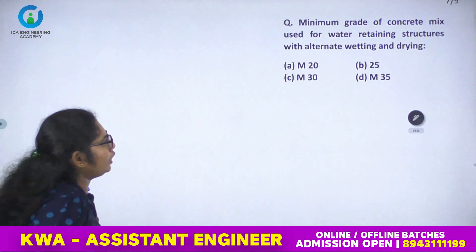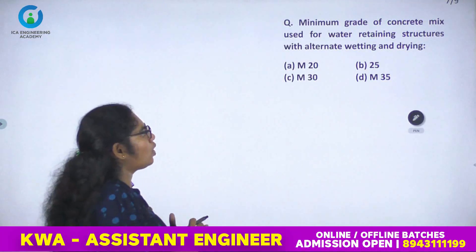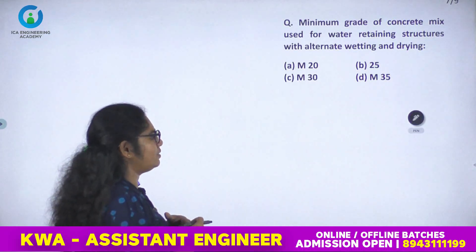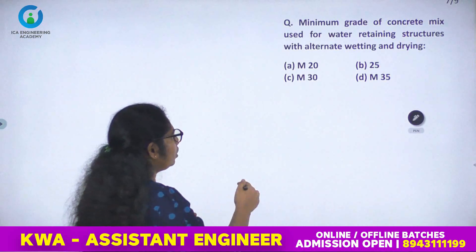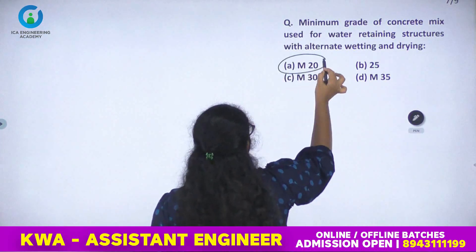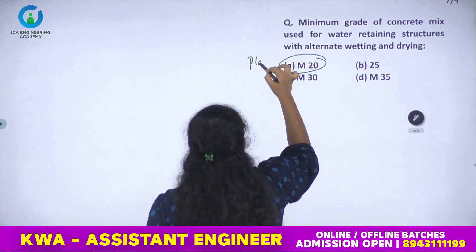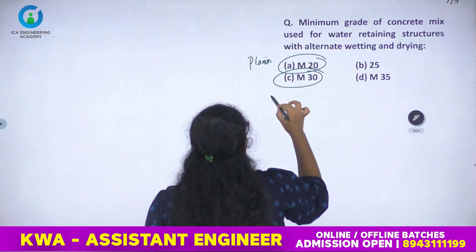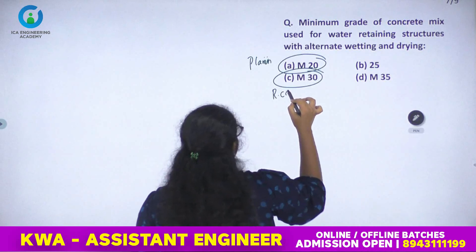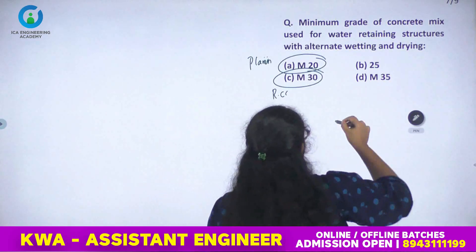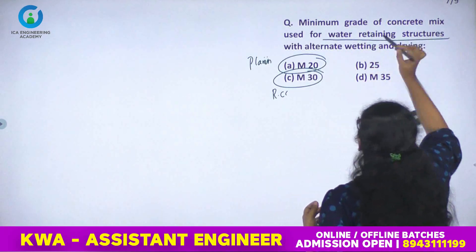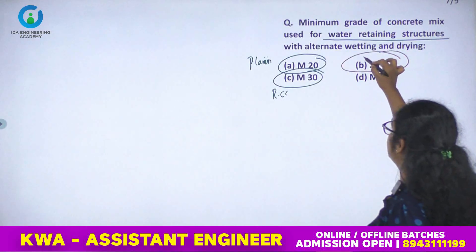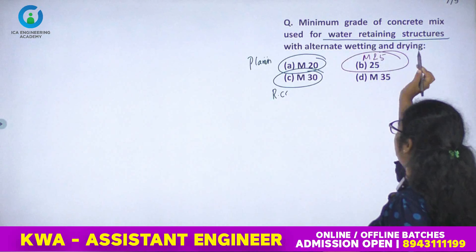Next question: what is the minimum grade of concrete mix used for water-retaining structures with alternating wetting and drying? M20 is used normally, M30 for reinforced concrete, but for water-retaining structures the answer is M25.